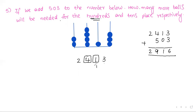The tens place: the original number has one in the tens place and the new number also has one, so no more balls are added — tens place is zero. The hundreds place: four hundreds are there but we need nine, so five more balls are added. The answer is five comma zero: five balls needed for hundreds place and zero for tens place.